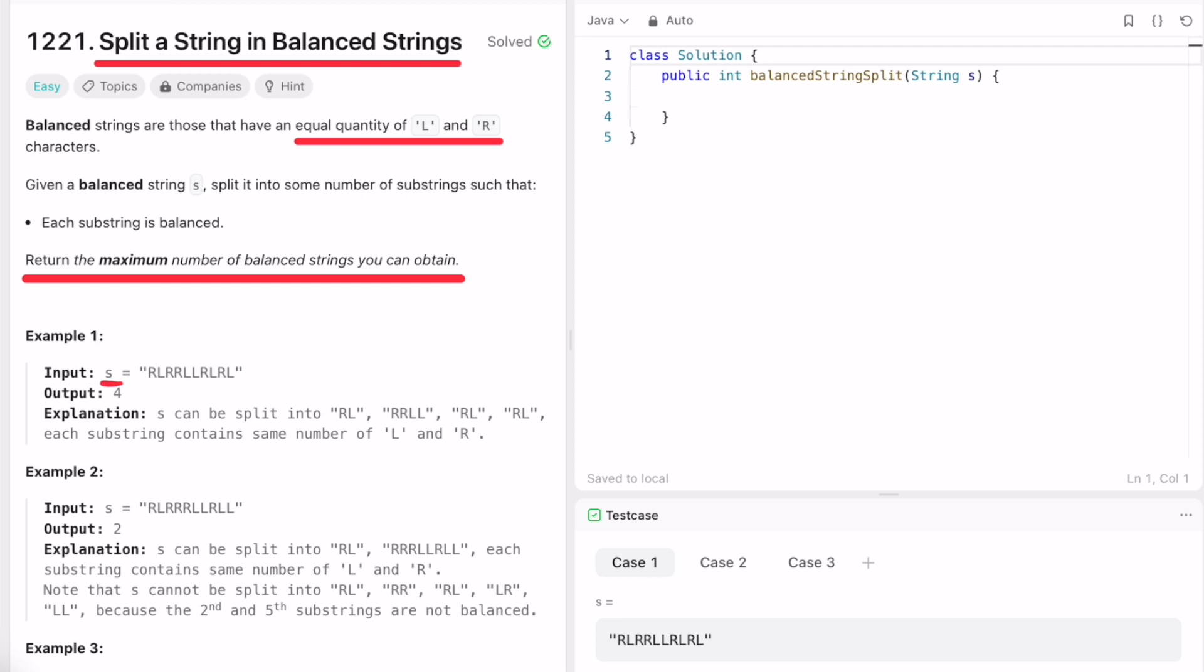Let's take this example and see how we can build the logic. So you have the string. Now you can see that this is one balanced string, this is one balanced string, this is one balanced string, and this is one balanced string. So how are you judging if a string is balanced or not? You're counting how many R's and L's are present in each substring.